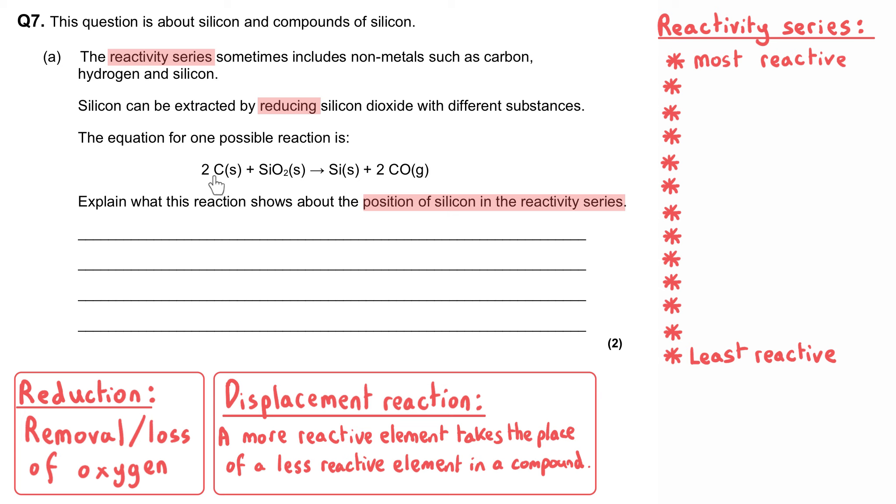And the carbon must be the reducing agent, because at the beginning it is by itself, but at the end it has got the oxygen that it has removed from the silicon. And what this is proving is that the carbon is displacing the silicon from the silicon dioxide. It is bonded to oxygen at the end, and silicon is not. And this must be because carbon is more reactive than the silicon.